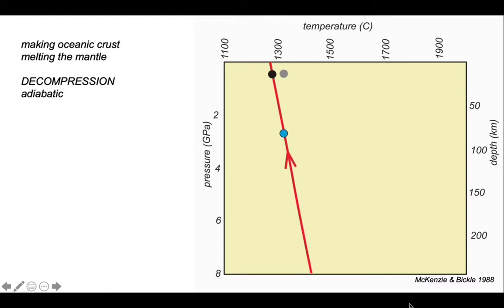So the path taken by our mantle as it rises in pressure-temperature space is something like this. It's a constant energy path. We're saying that this decompression is adiabatic, and this type of path which is constant energy is called an adiabat.